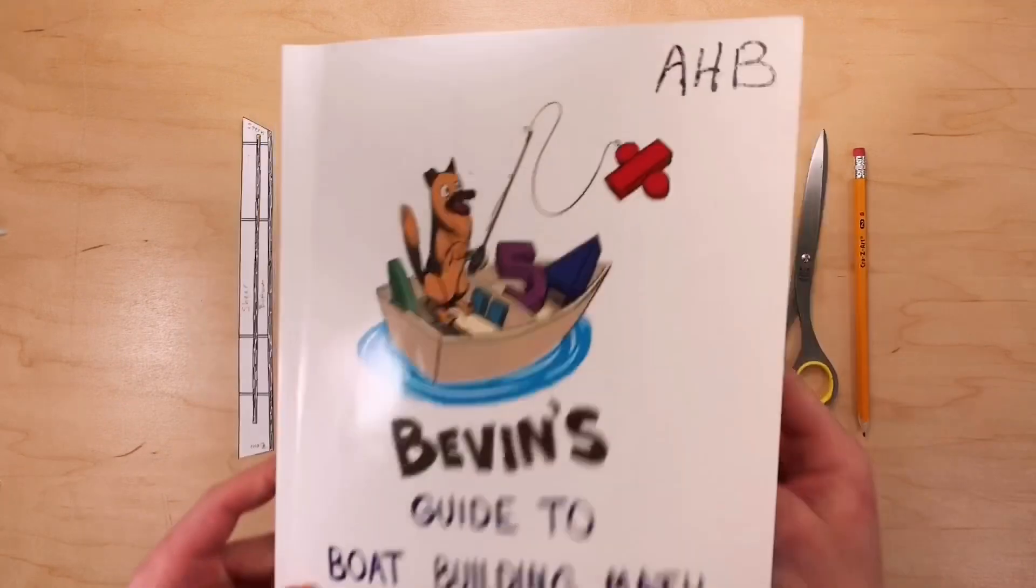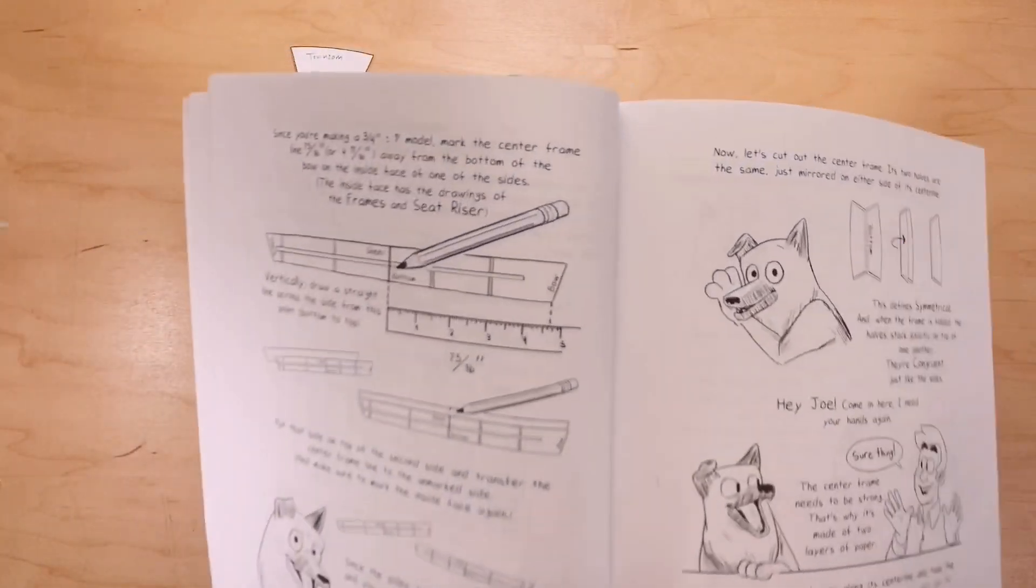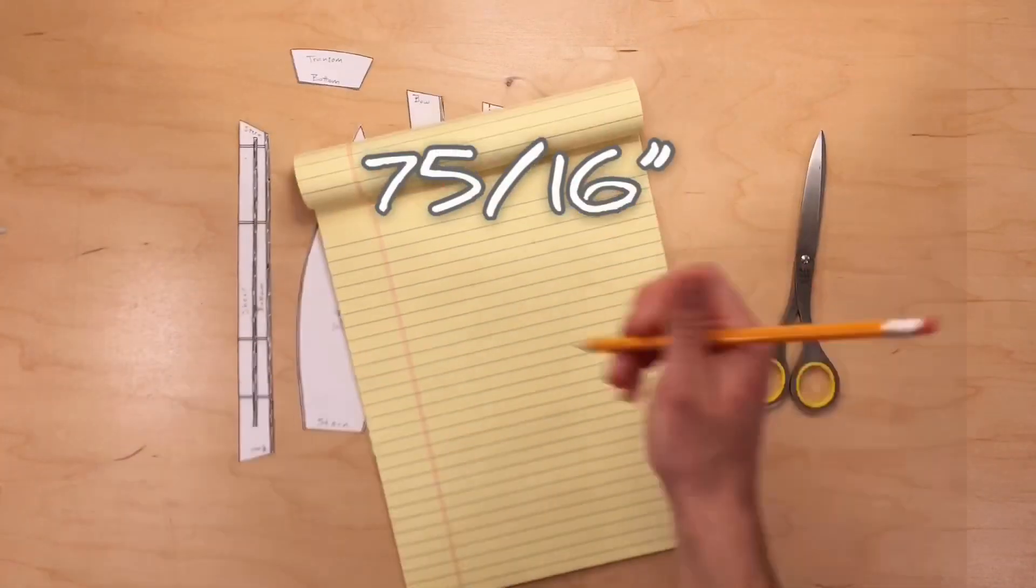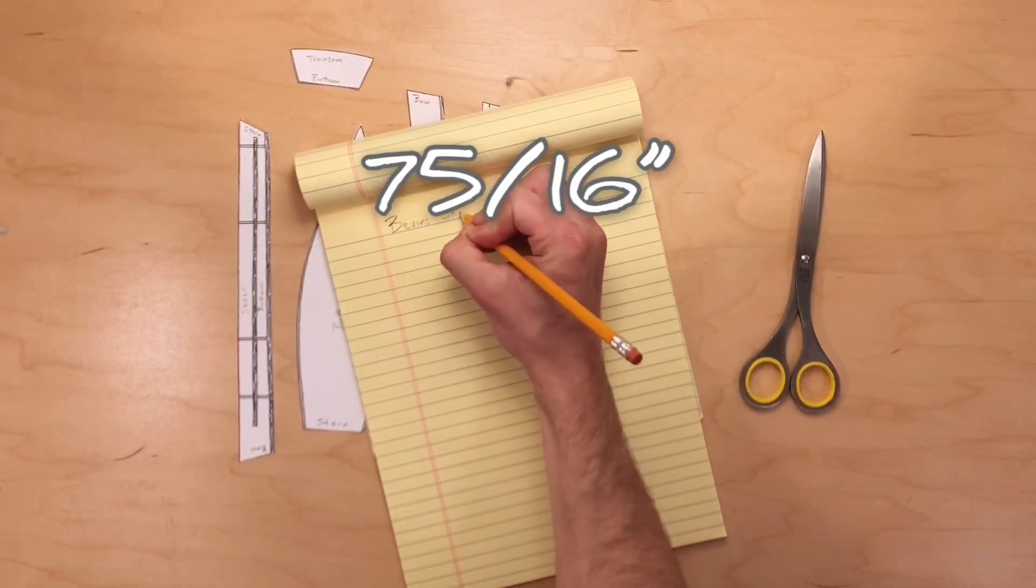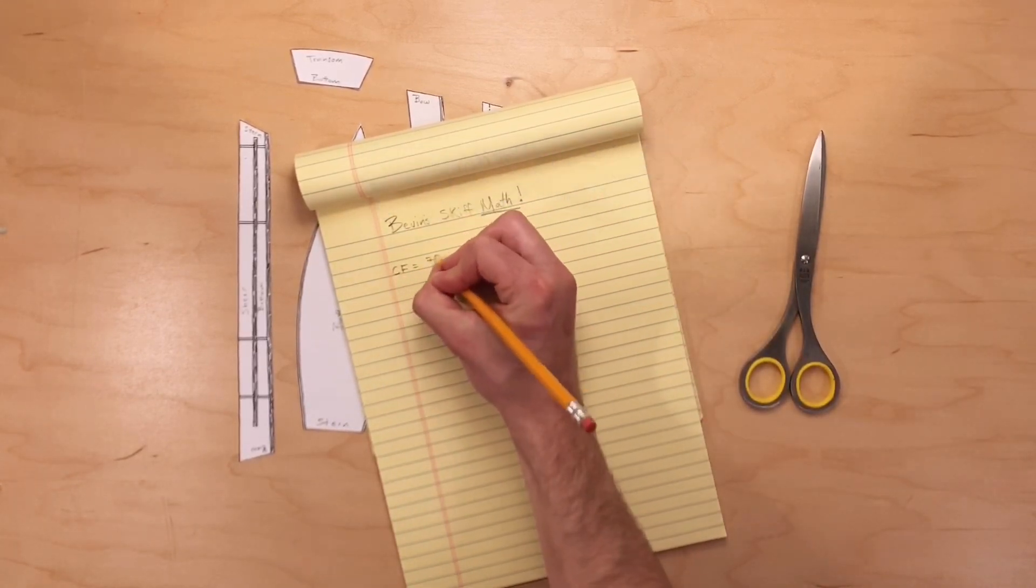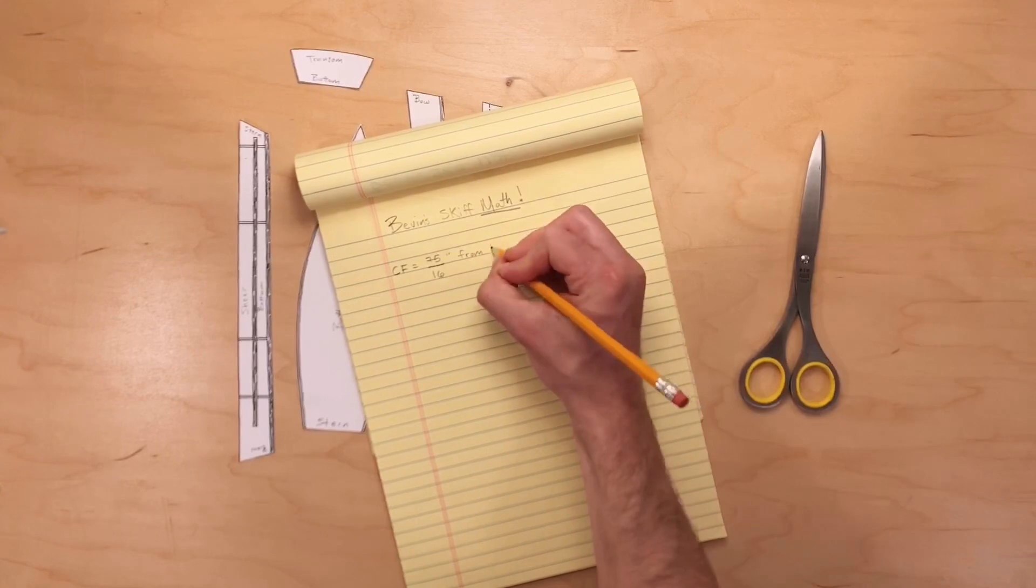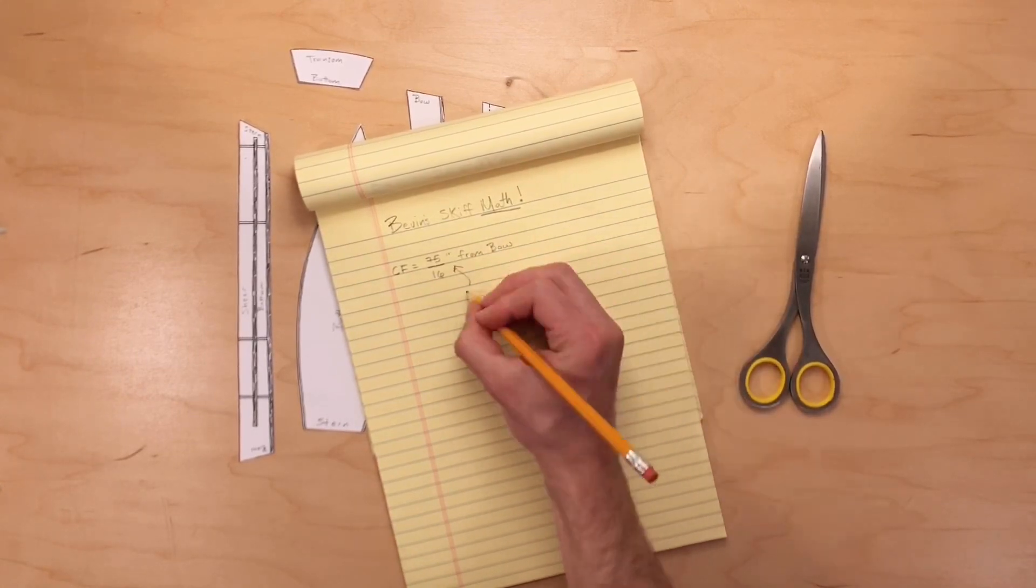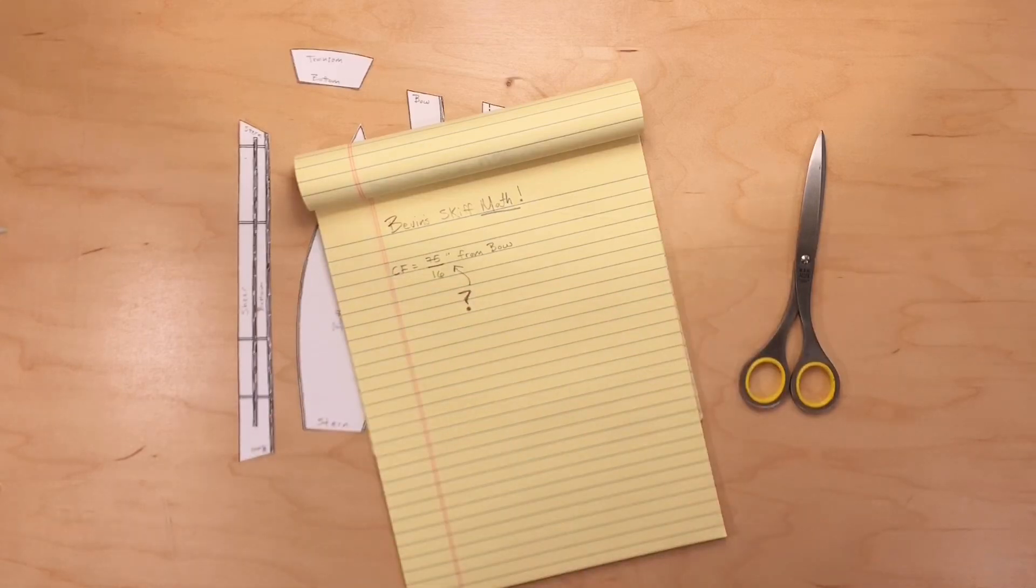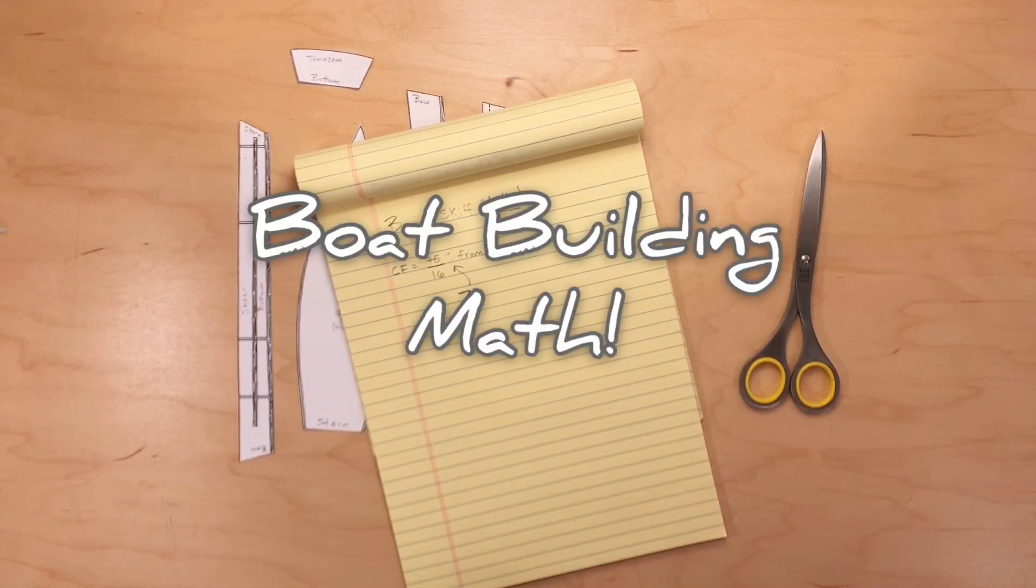Time to refer back to the manual to see what to do next. We can see on this page that we need to measure and locate where to place the center frame. Joe's instructions tell us to place the center frame 75 sixteenths away from the bottom of the bow on the inside face of one of the sides. However, I don't see this number on my tape measure and this is where boat building math comes into play.